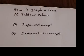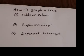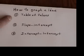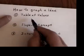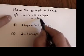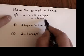Now we're going to look at three ways to graph a line. The first way is the table of values — it is the slowest method.